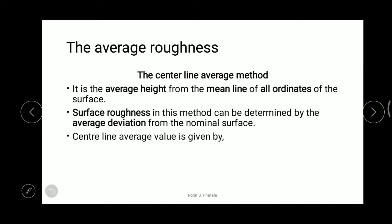The arithmetic average means we calculate heights from a datum line or reference line, take the average of all these heights, and get exactly how the roughness pattern is. This mean line is the average line and the ordinates are the heights from this average line, or height from the mean line.